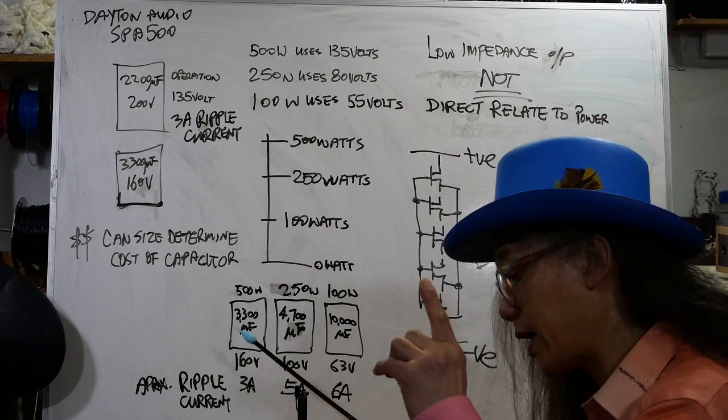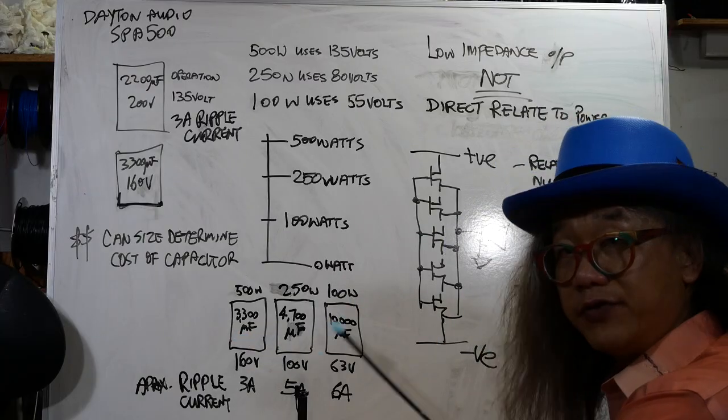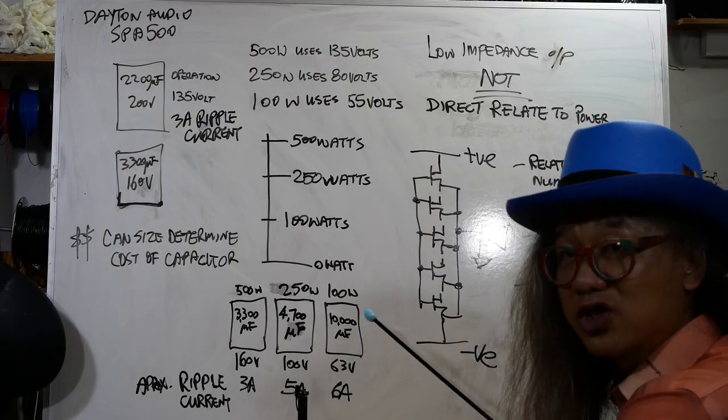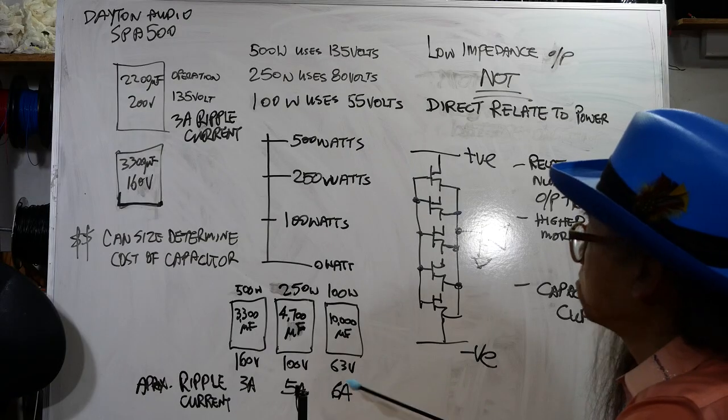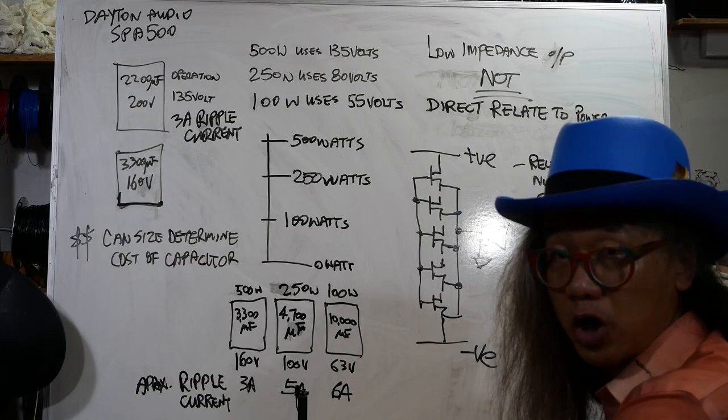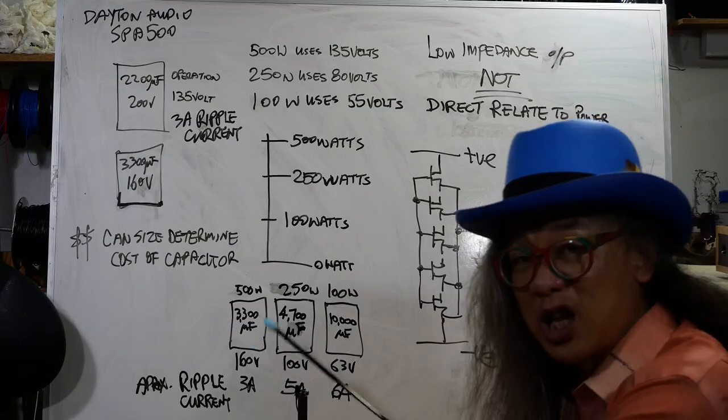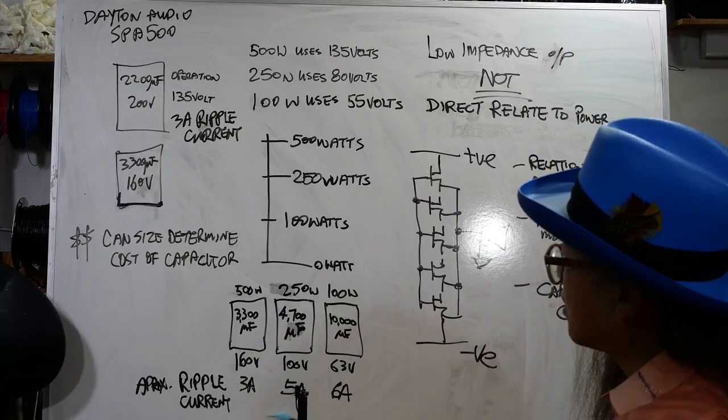I'm comparing all this in general purpose capacitors, not a specific design. There are some specific designs that can have a slightly, just tiny bit bigger can, and have almost twice the ripple current, but they cost a lot more. So in order to be a fair comparison, I compare the same price, same size can, and these are the differences.